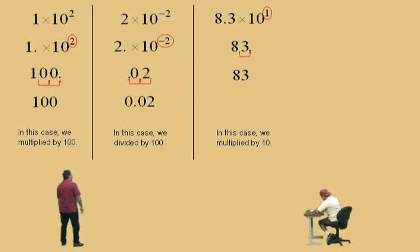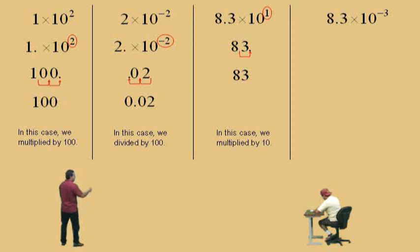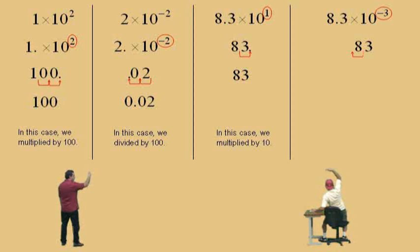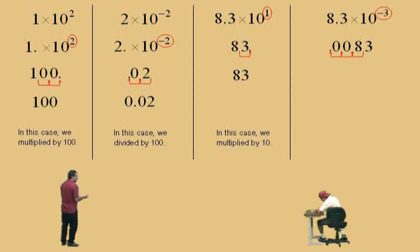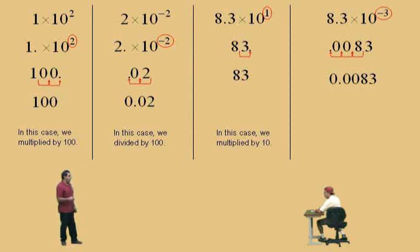Eight point three times ten to the negative three: we have our exponent as negative three, so we move the decimal to the left three times. Put your zeros in there as placeholders, put your decimal down, and the answer is 0.0083. In this case, we divide by a thousand.